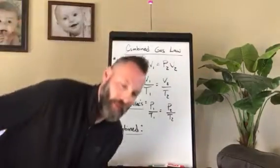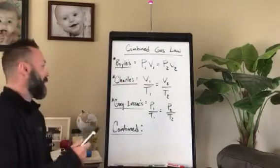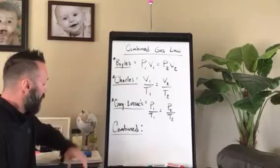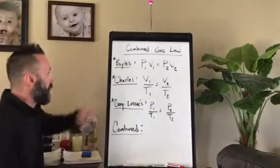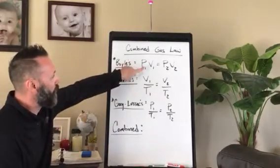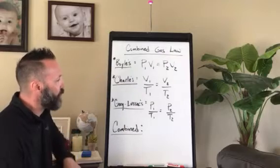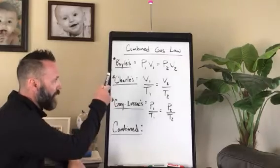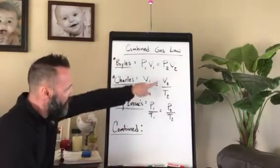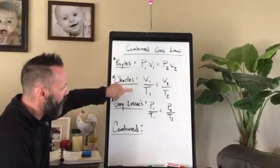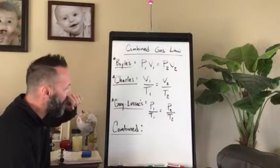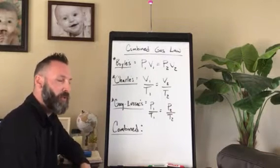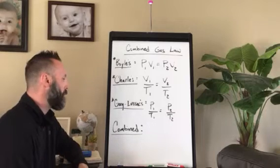Today we're going to combine three gas laws into what we call the combined gas law. To review quickly: Boyle's law states P1V1 = P2V2, where temperature is held constant. Charles's law states V1/T1 = V2/T2, where pressure is held constant. Gay-Lussac's law states P1/T1 = P2/T2, where volume is held constant.